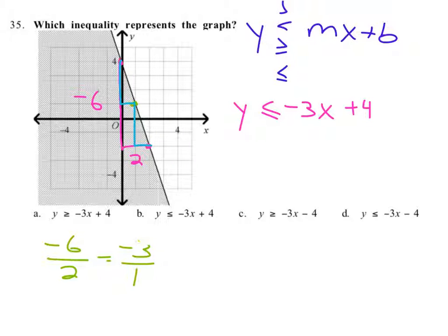And that's an equation. So now what we're doing is we're just looking for where do we see y is less than or equal to negative 3x plus 4. y is less than or equal to negative 3x plus 4, and that is b.